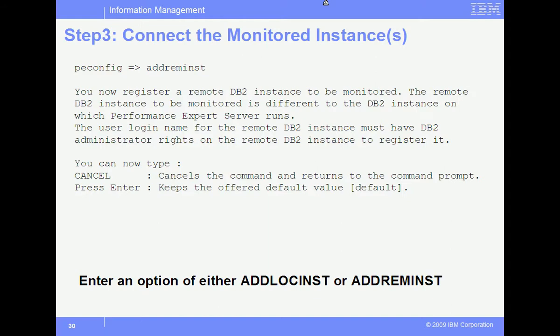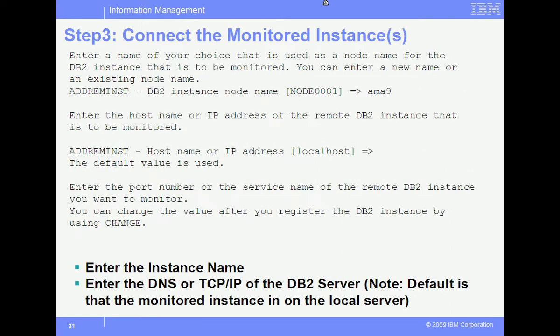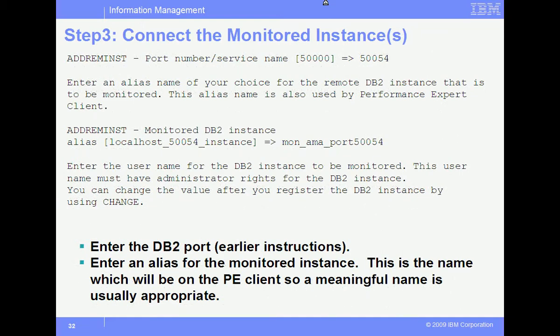You'll be prompted for the DB2 instance name and the TCP IP name or DNS name of the server. Note that in this example, it is a local instance added so that the default is used. You'll be prompted for the port which we obtained earlier. Next, a prompt for the alias name used by PE client. Be sure that a meaningful name is used instead of something generic with no meaning, like calling it db65.